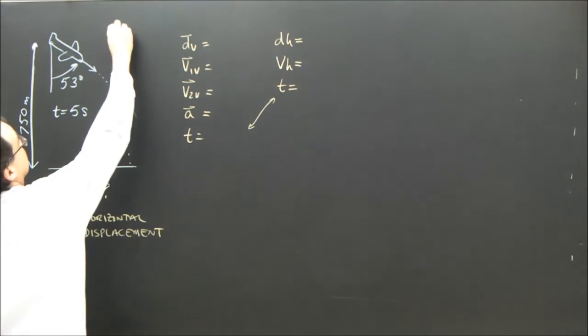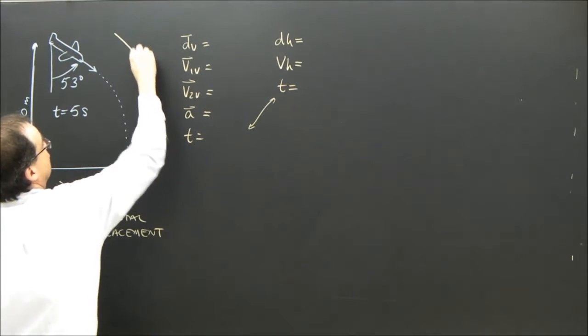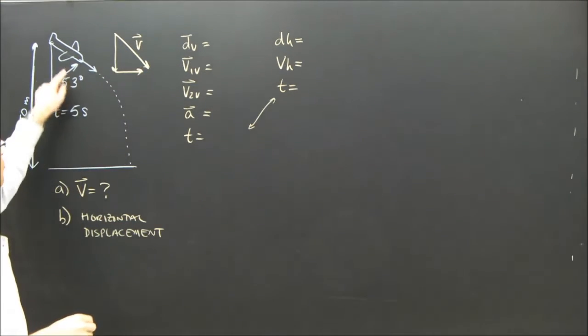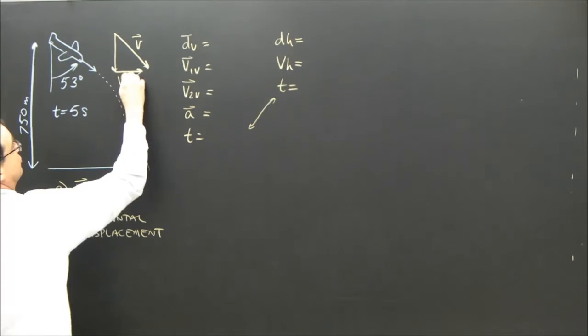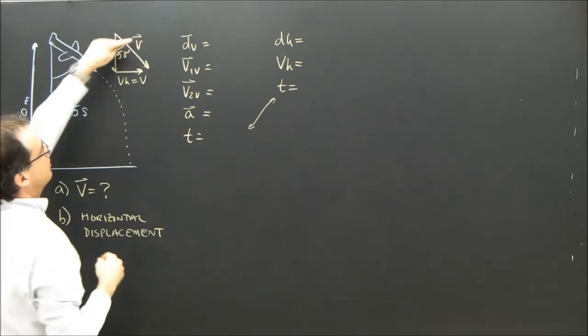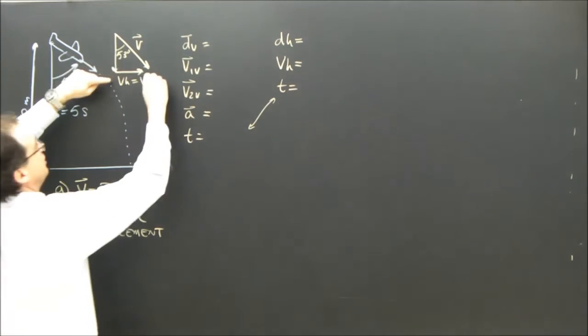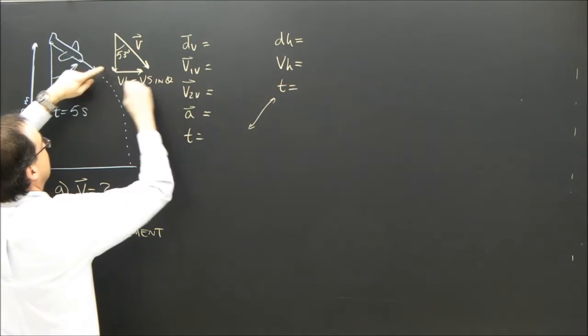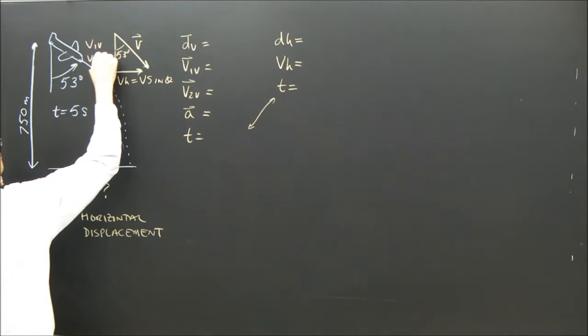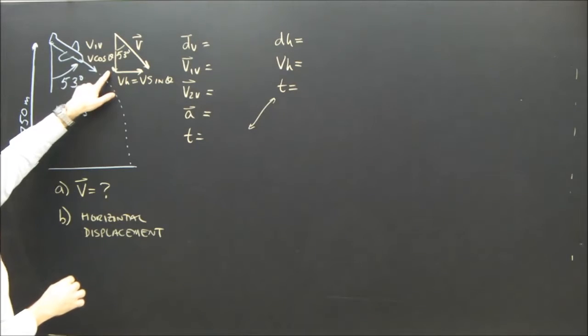Well, I'm going to just make a sketch of this velocity. The horizontal velocity here, V horizontal, would be V. This is 53 degrees. This is the opposite, so it's V sine theta. And the vertical, V1 vertical, is V cosine that angle, 53 degrees.